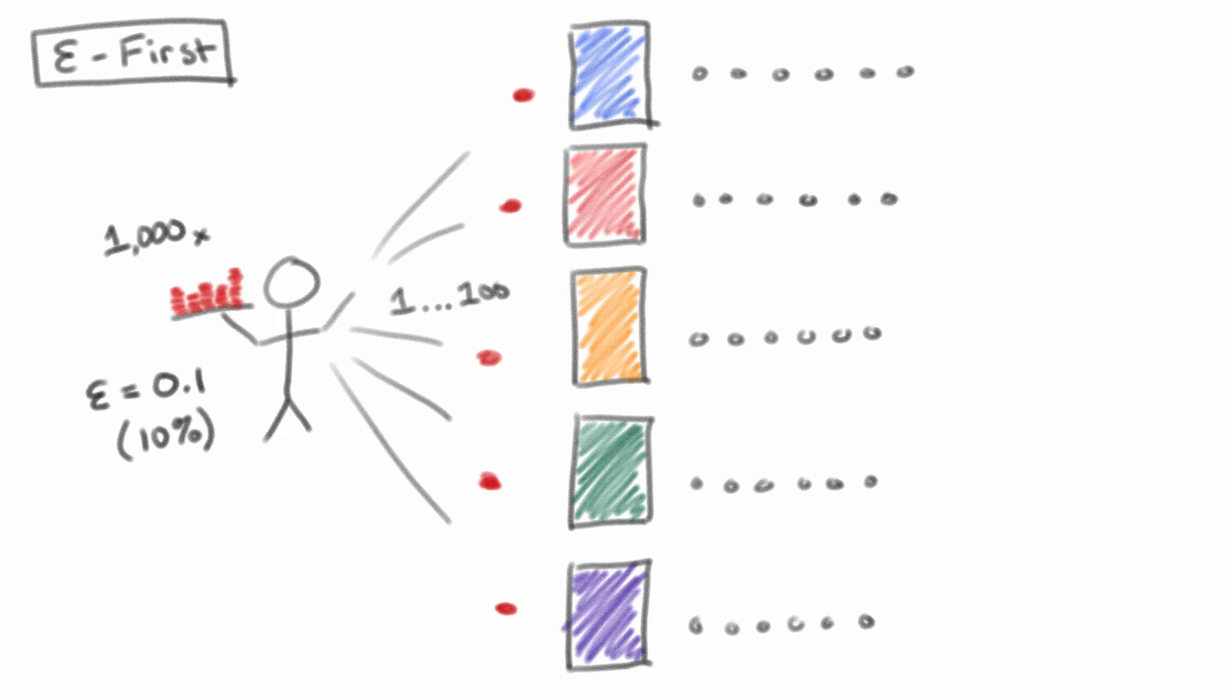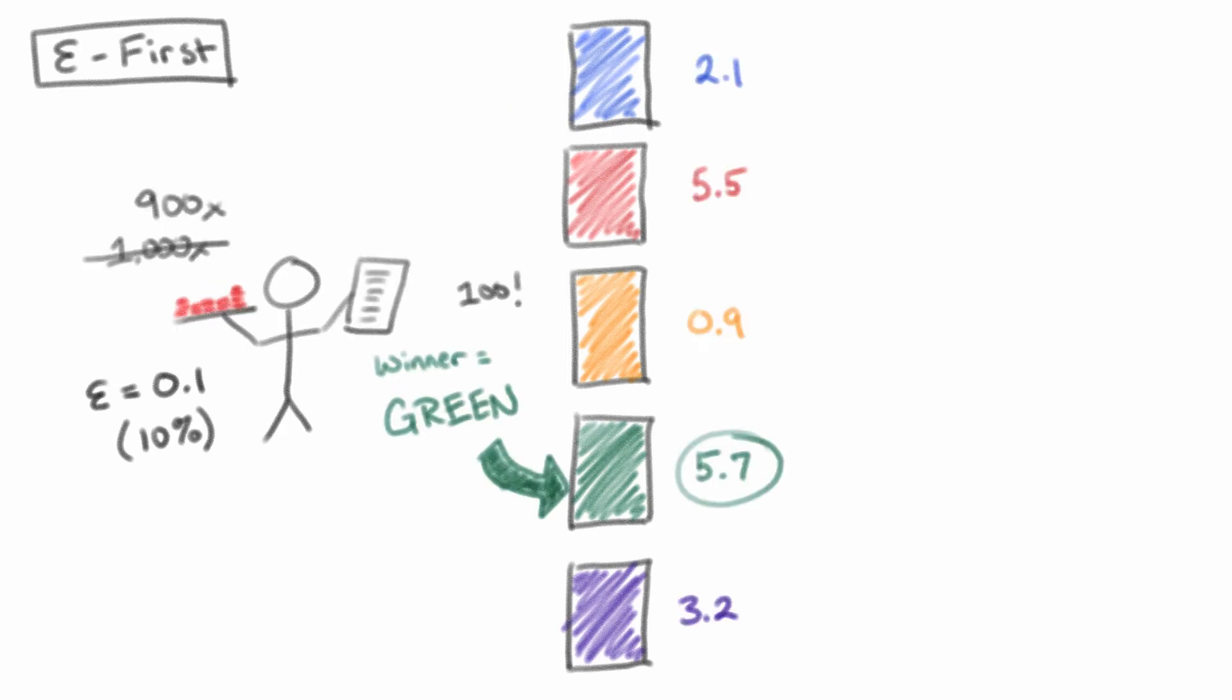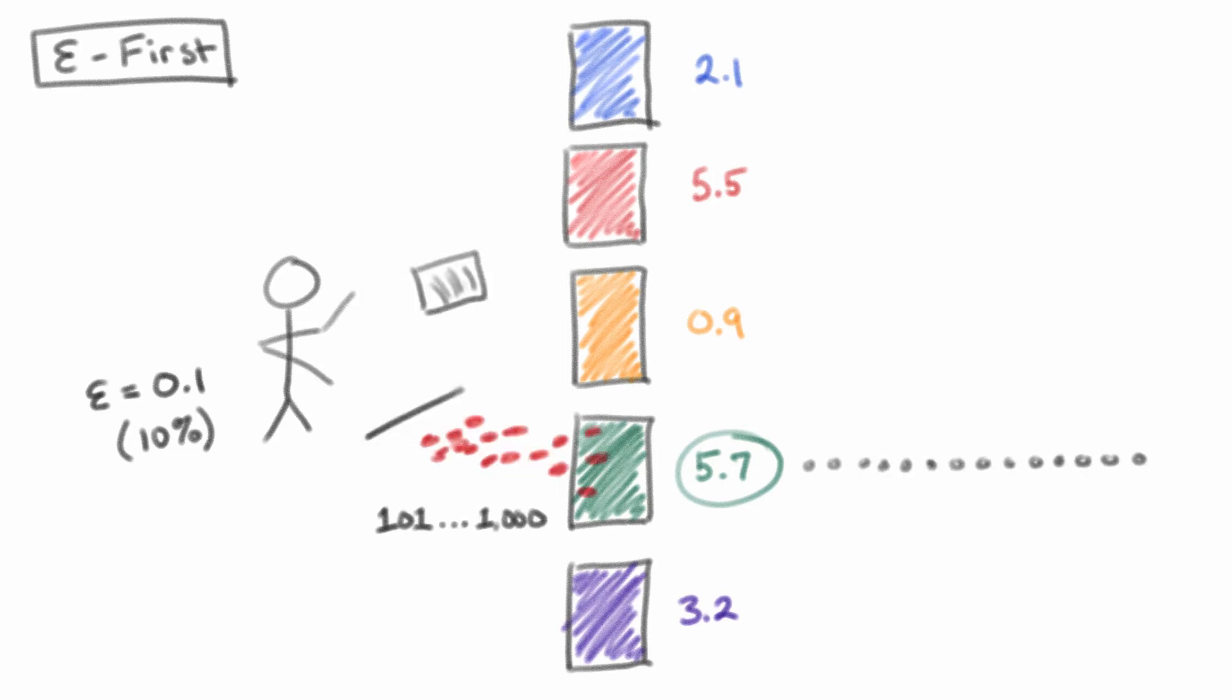After that point, we will use our knowledge of the machines to declare a winner, and on the 101st token, and from that point on, we will devote everything to the machine that yielded the highest average reward.